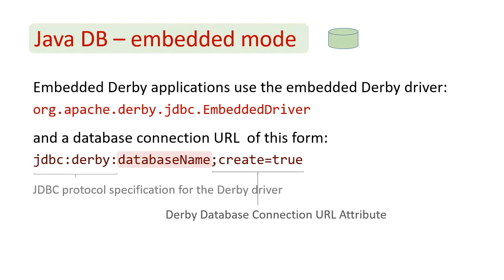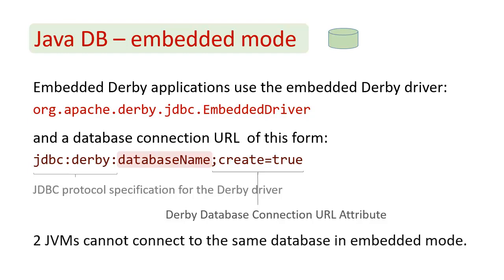Alternatively, those attributes could also be set in a properties object. There is one more thing I want to point out: two JVMs, two Java Virtual Machines, cannot connect to the same database in embedded mode. That means if you want to share a database between multiple applications, don't use JavaDB in embedded mode. You could use JavaDB in server mode, or you could use a different data source altogether.